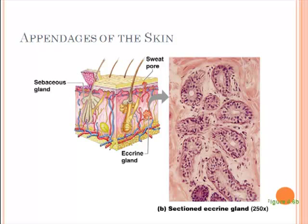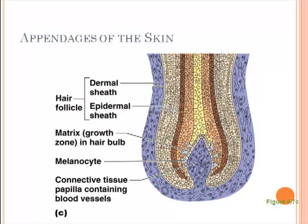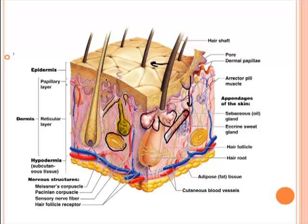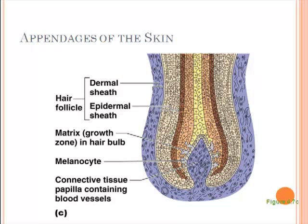A hair follicle is found in the dermal layer of the skin. Looking at the picture, the hair follicle extends all the way down into the dermal layer, where blood vessels and nutrients come in and associate with the hair follicle. Notice that the epidermis has a tan color, and that same tan color runs all along the hair follicle clear to the bottom — this shows that even though the hair follicle is found in the dermal layer, it comes from epithelial tissue, not connective tissue. Around the hair follicle is a dermal sheath of connective tissue, and blood vessels are located in the dermal layer. Epithelial tissues are avascular.